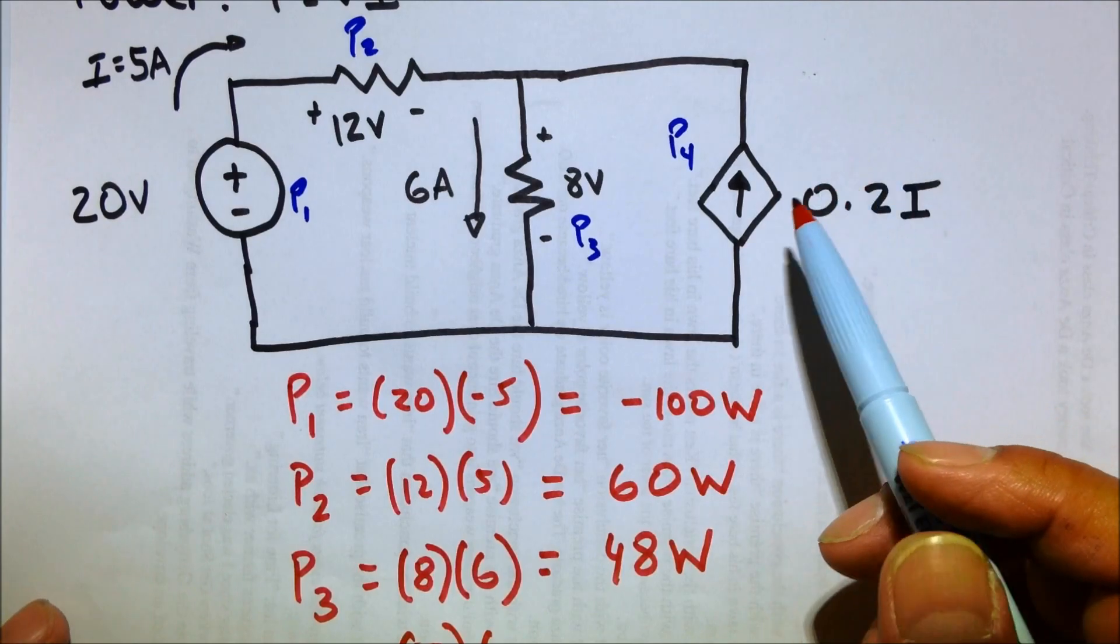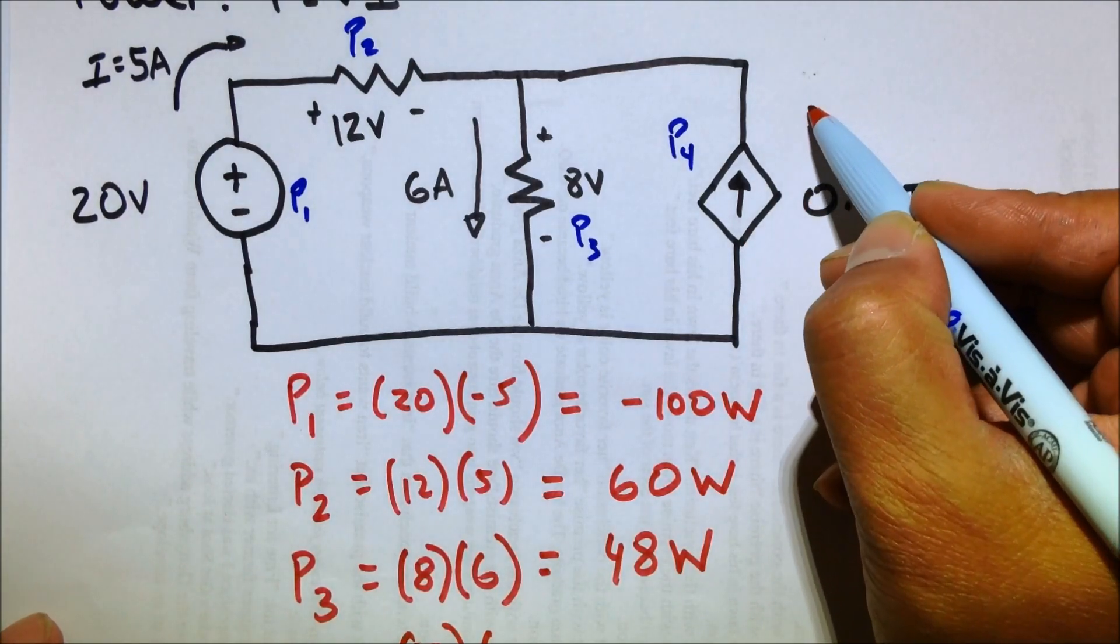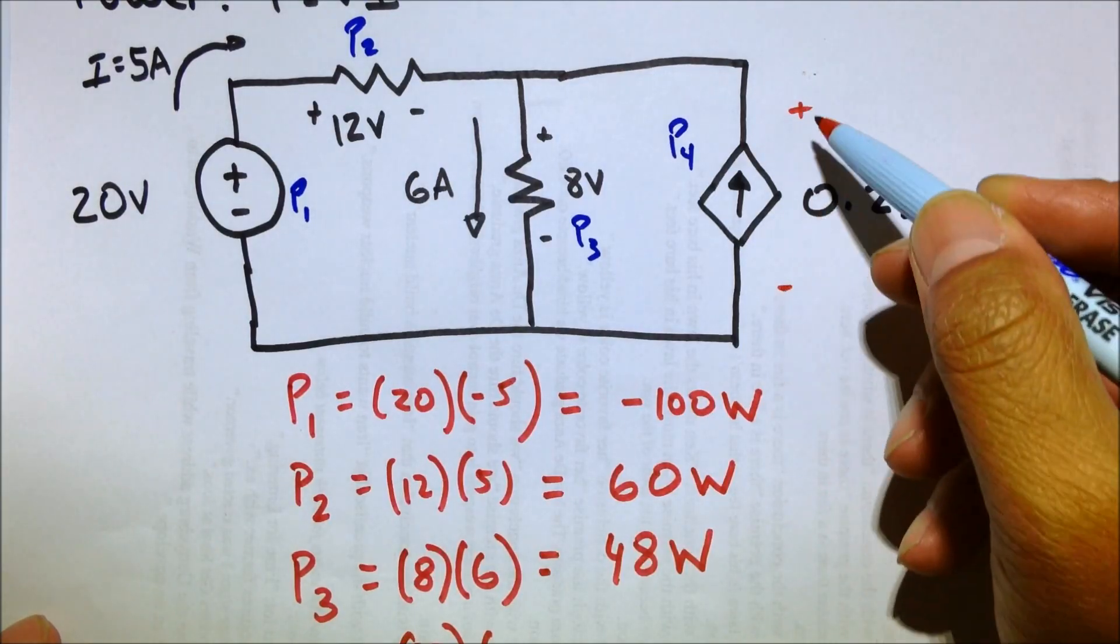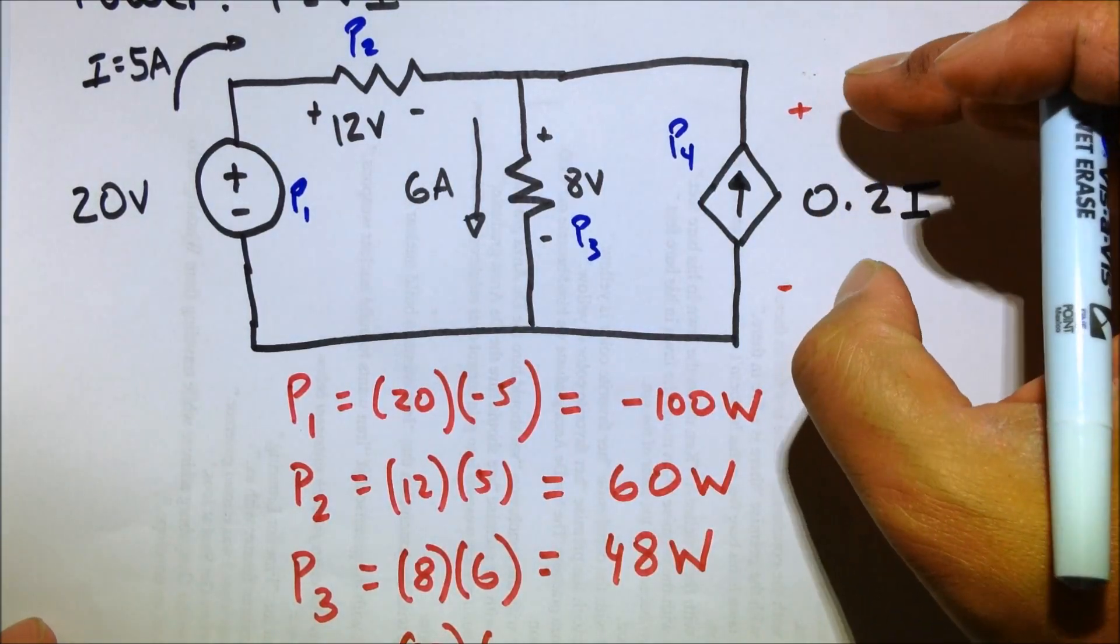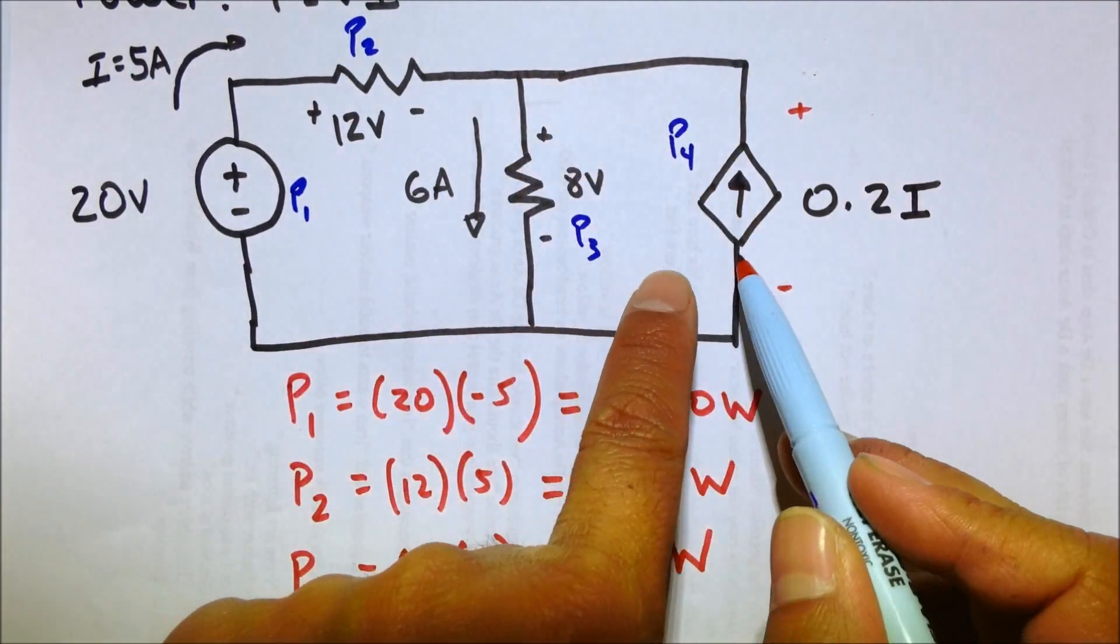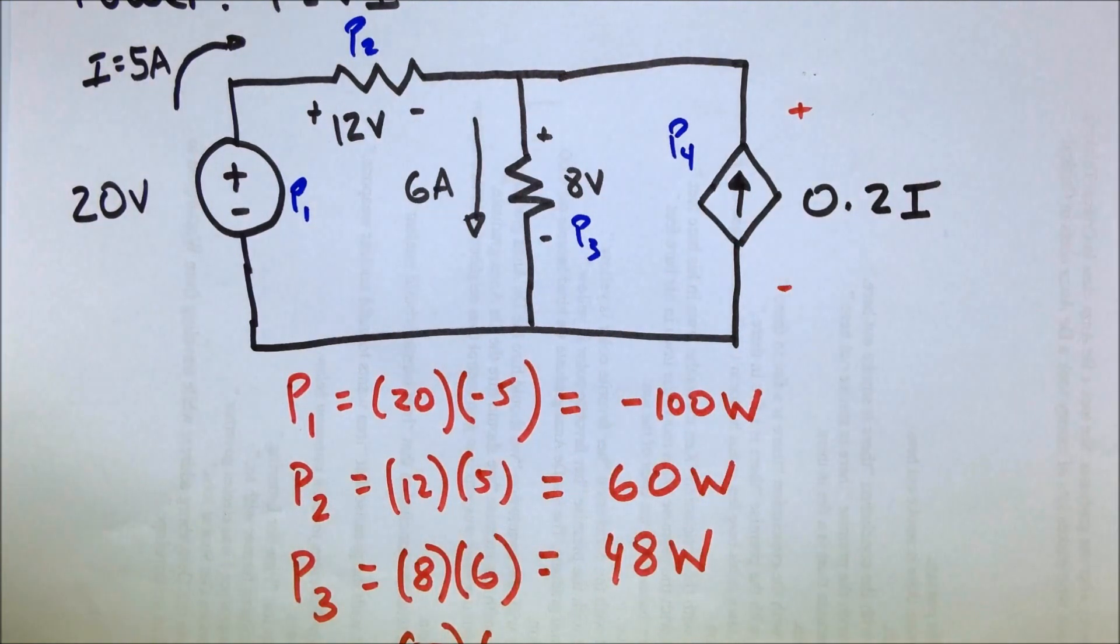So 8 volts times the current. OK. Now think of what we just said about convention. We're going to say voltage is going this way, right? The potential goes from higher to lower this way. So 8-volt drop across here. But we're saying the current is flowing that way, at least the way it's drawn. So this is going to be a negative current, 0.2i.